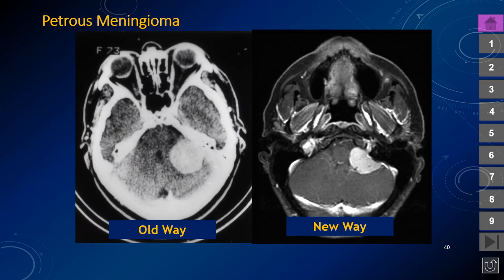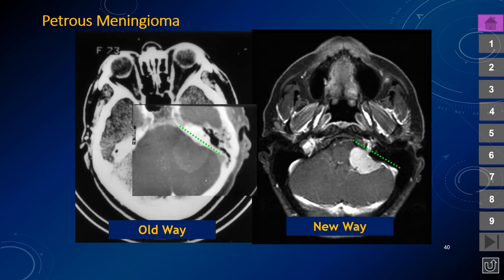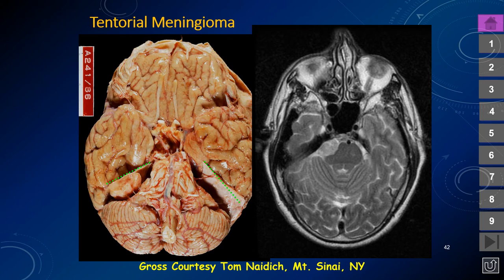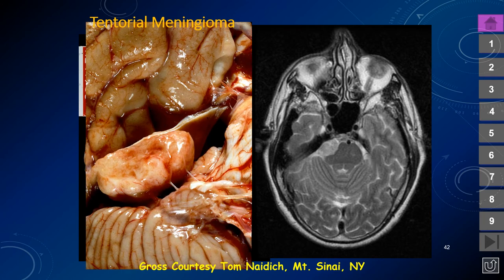Looking at petrous meningioma imaging, on CT with bone windows you can see the bone bulging towards the lesion, indicating hyperostosis. On MR, the hypointensity of the petrous bone is rounded and convex, bulging toward the tumor. An intradural soft tissue mass associated with overlying bony hyperostosis is almost invariably a meningioma. This beautiful example illustrates the tumor attached to the dural tentorium, roughly hemispherical in shape.